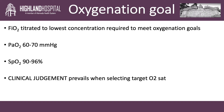What are the oxygenation goals for our patients? We should aim for low-normal normoxia. The FiO2 should be titrated to the lowest concentration required to meet oxygenation goals. In our practice, we ideally aim for arterial oxygen tension, or PaO2, between 60 and 70 millimeters of mercury, and the peripheral oxygen saturation between 90 and 96 percent. Further increases in the PaO2 add relatively little to the oxygen content of the blood.